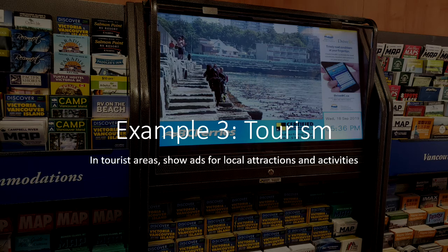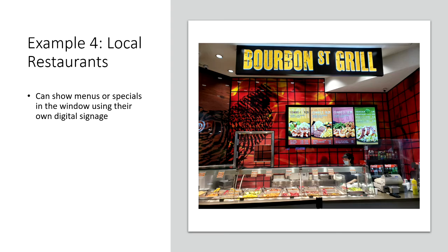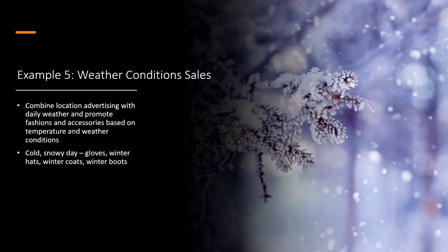Fourth example: a local restaurant can show menus or specials in the window using their own digital signage, or if you've got digital signage close to that location, you can do that as well.